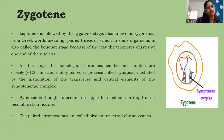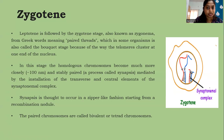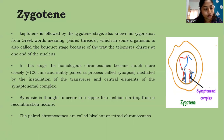Leptotene is followed by the zygotene stage, also known as zygonema, meaning 'paired threads' in Greek. In some organisms this stage is called the bouquet stage because of the way telomeres cluster at the end of the nucleus, resembling a bouquet handle. During zygotene, homologous chromosomes become much more closely and stably paired through synapsis, mediated by the installation of the transverse and central elements of the synaptonemal complex. Synapsis is thought to occur in a zipper-like fashion starting from a recombination nodule. The paired chromosomes are called bivalents or tetrads.